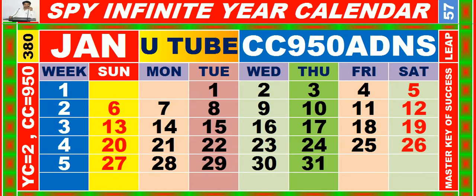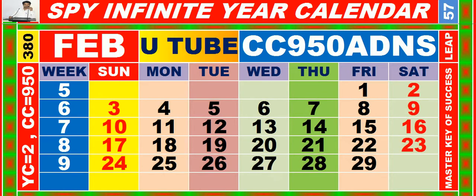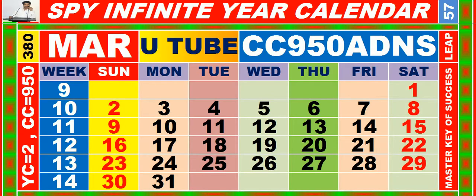Calendar for the month of January having calendar code equal to 950. Calendar for the month of February having calendar code equal to 950. Calendar for the month of March having calendar code equal to 950.